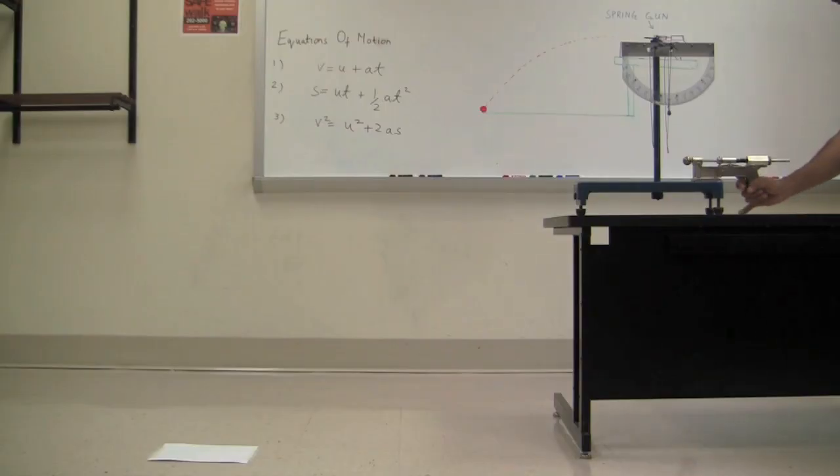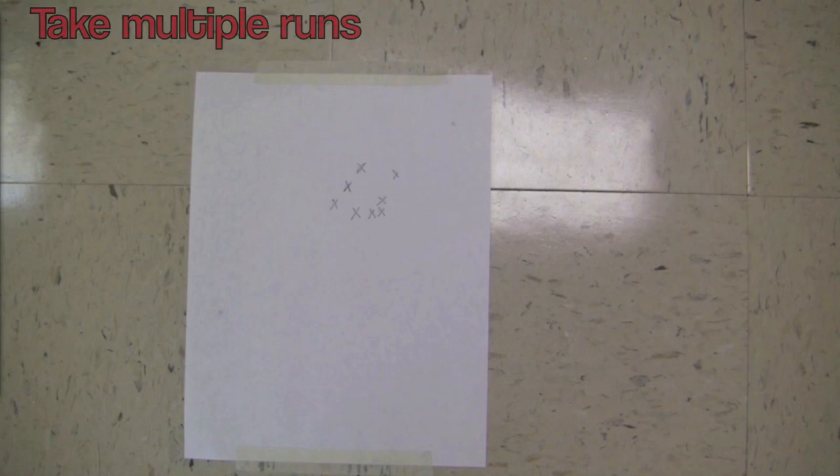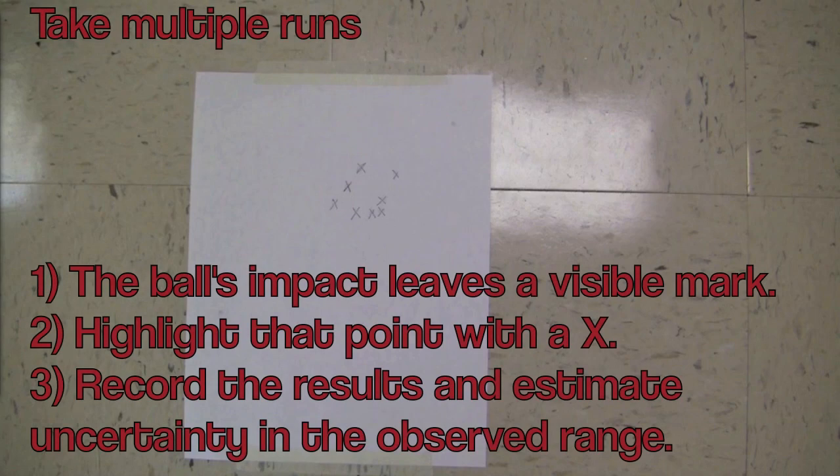To check the prediction experimentally, record results from several shots. The ball's impact on the paper leaves a visible mark. Record the results and estimate the uncertainty.